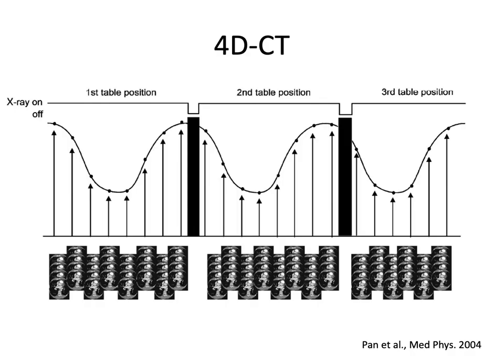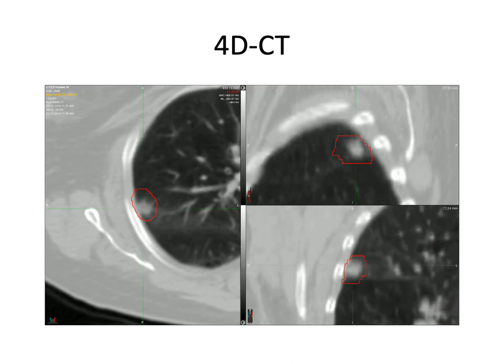A 4D CT adds the dimension of time to a regular CT and allows for images to be acquired at each phase in the breathing cycle. Once all the images are acquired, they are linked and can be viewed as a video so that the tumor can be seen in all physiologic states, as opposed to just a snapshot with a standard 3D CT. You can see the tumor moving almost in a circle on the sagittal image and coming in and out of view on the axial, ensuring you're capturing the tumor through all phases of breathing.